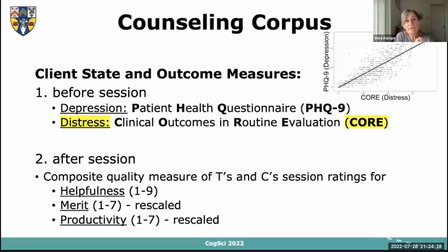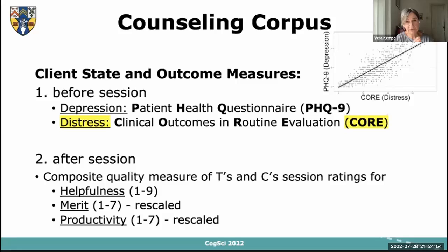The value of this corpus comes from the fact that we also have a range of ancillary measures about the mental state of the clients, particularly measures of depression and distress. For depression, they used the Patient Health Questionnaire, the PHQ-9, and for distress, the CORE — the Clinical Outcomes in Routine Evaluation questionnaire. These two measures are extremely tightly correlated, so for everything I'll be reporting today, I'll use the CORE distress scores.